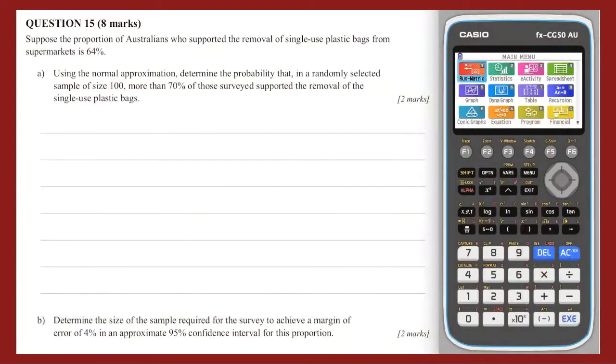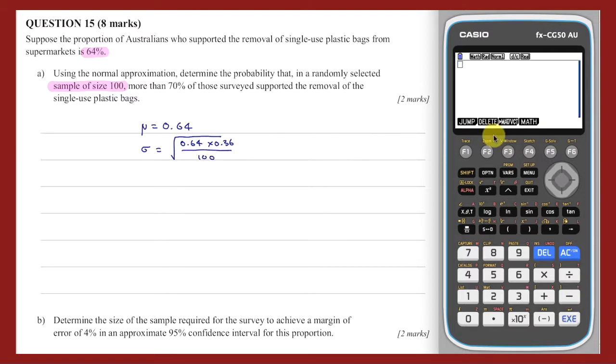Question 15. In part A of this question, we are asked to use the normal approximation to the binomial distribution with proportion p equals 0.64 and sample size 100. The normal approximation to this distribution will have a mean of mu equals 0.64 and a standard deviation equal to the square root of p by 1 take p over n. This we can evaluate on our CG50. So sigma equals 0.048.